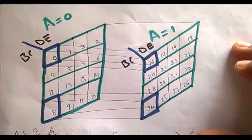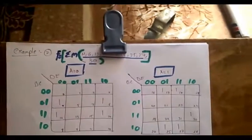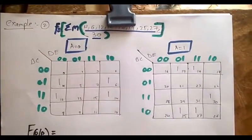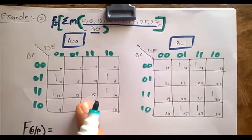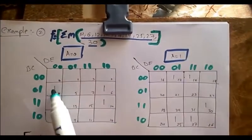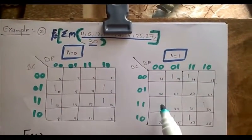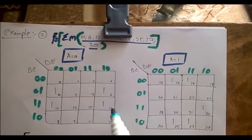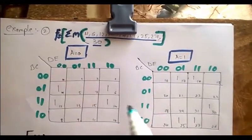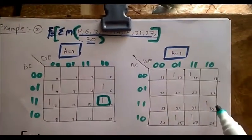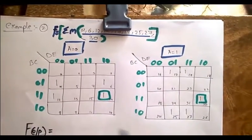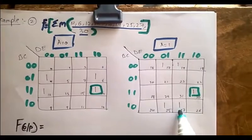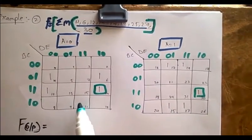In this, if we map this K-map onto this, we don't find any adjacency. 4 and 20 adjacent, 12 and 28 adjacent, 6 and 22 adjacent, 14 and 30 adjacent. See, this 14 and 30 is adjacent, so it forms a pair.